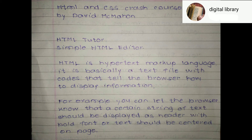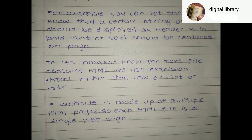For example, you can let the browser know that a certain string of text should be displayed as a header with bold font, or that text should be centered on the page. To let the browser know the text file contains HTML, we use the extension .html rather than .doc, .text, or .rtf.